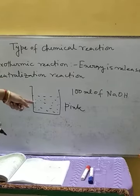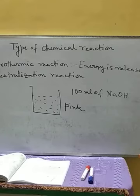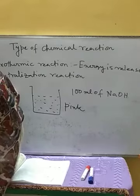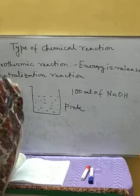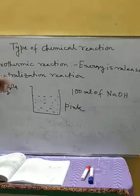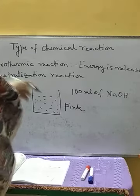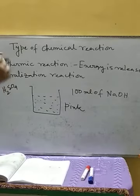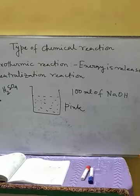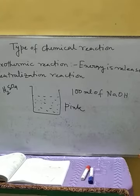Now in this basic solution, we are going to add dilute sulfuric acid H2SO4 dropwise — or HCl can also be used. We are continuously going to shake it with a glass rod. When we add the acid, we can see the pink color disappears at the point where the drop is falling, giving a colorless solution at that point, but then it turns pink again. We continue this process, adding the acid dropwise and stirring continuously.